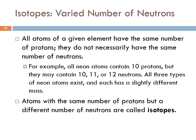All atoms of a given element have the same number of protons. They don't necessarily have the same number of neutrons. Neon atoms - every single last one of them has ten protons. But some of them have ten neutrons, some have eleven neutrons, and some have twelve neutrons. There are three different versions of neon atoms. Because they have different numbers of neutrons, and the neutrons have significant mass, each of these types of atoms has a slightly different mass. Atoms with the same number of protons but different numbers of neutrons are called isotopes.